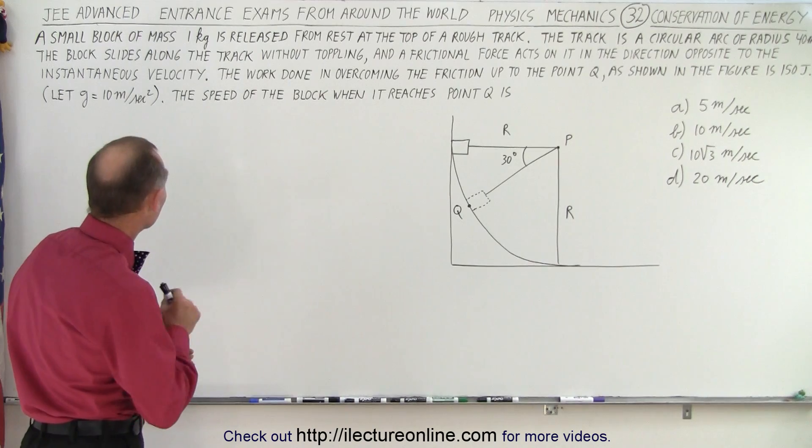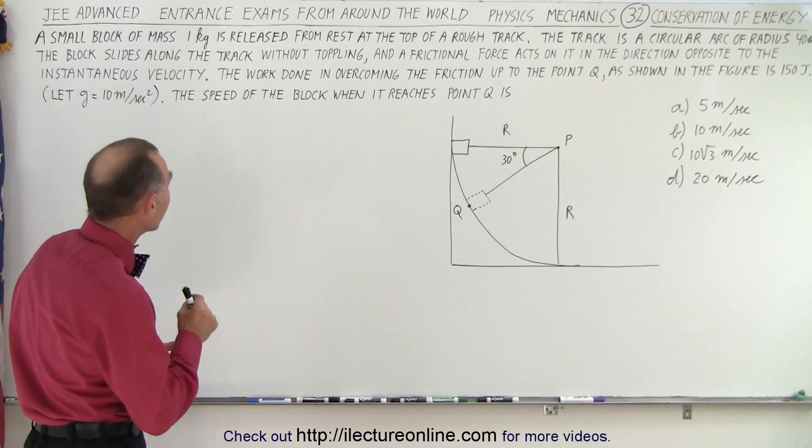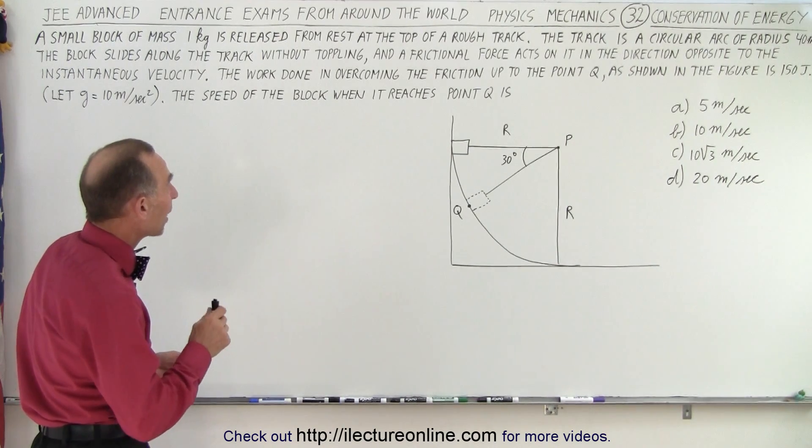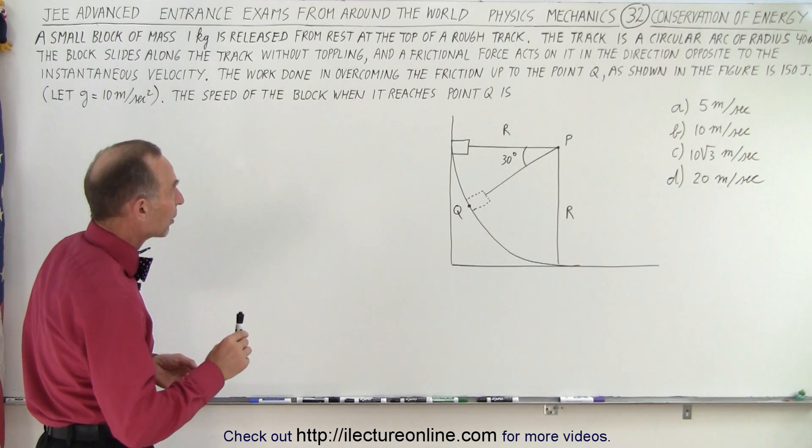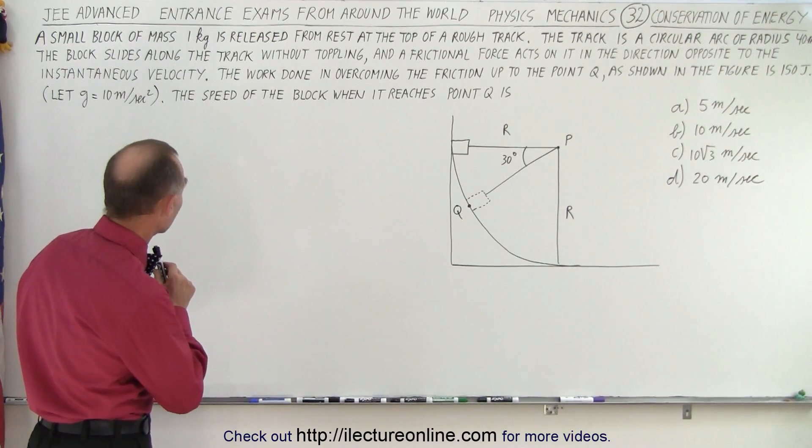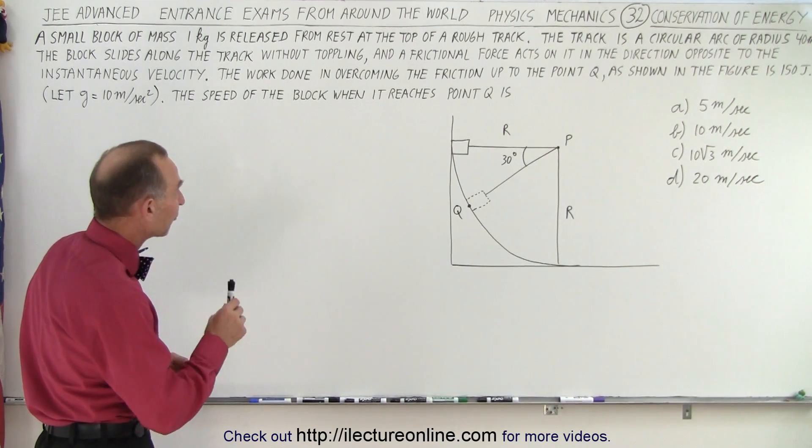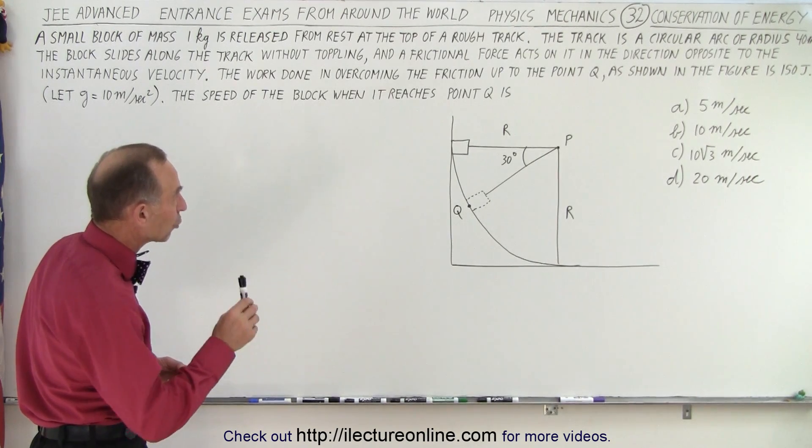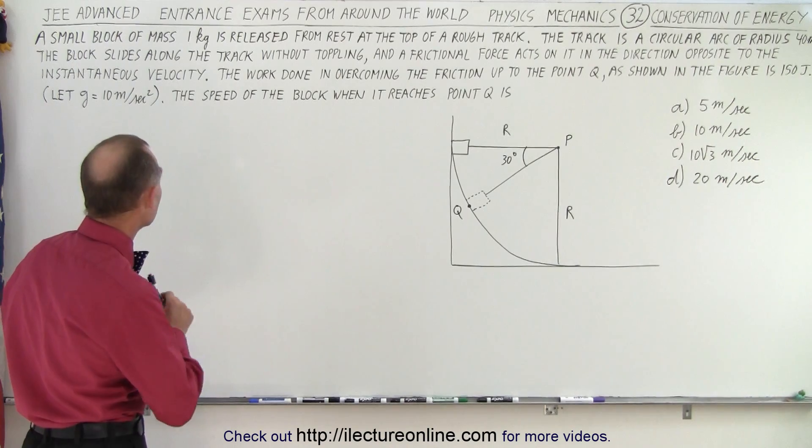A small block of mass one kilogram is released from rest at the top of a rough track. The track is a circular arc of radius 40 meters. The block slides along the track without toppling and a frictional force acts on it in the direction opposite to the instantaneous velocity.